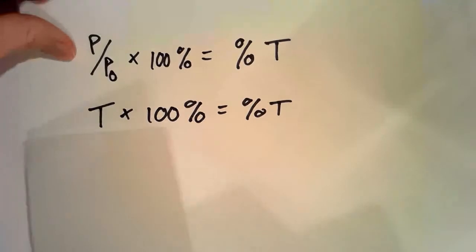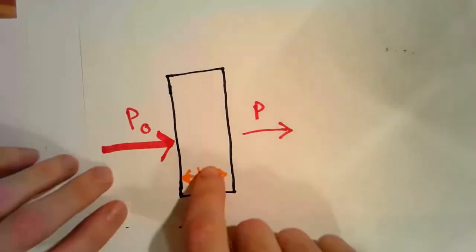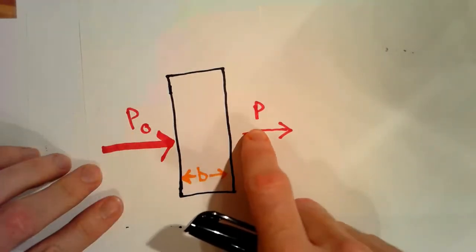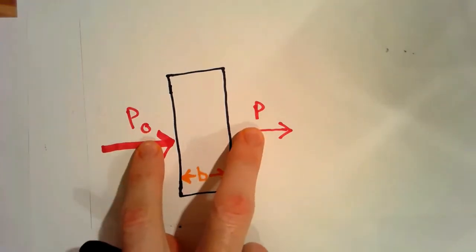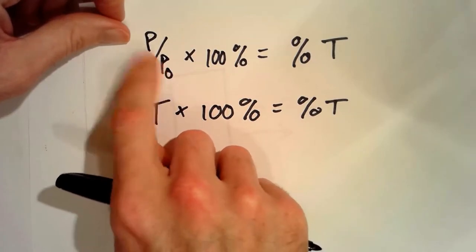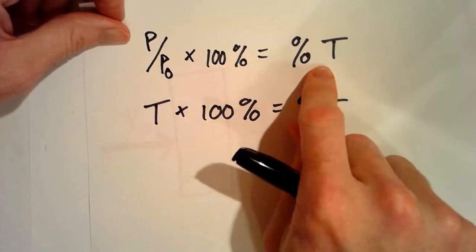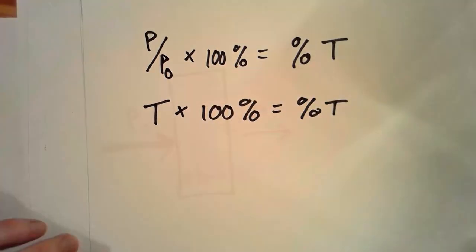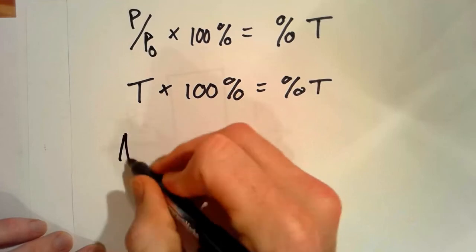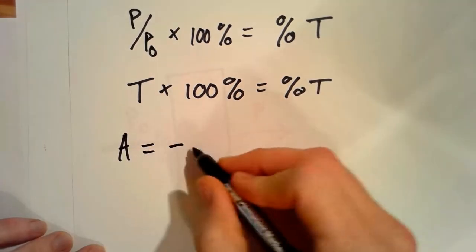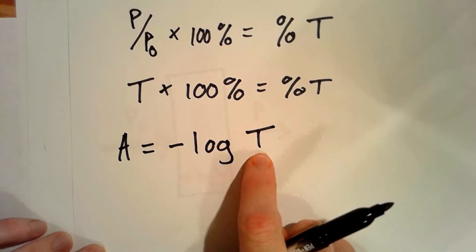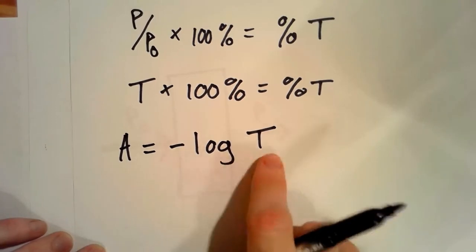If we take a completely pure, completely clear sample like distilled water, the power going in and the power going out should be equal to each other, giving us a value of 1. One times 100% gives us 100% transmittance. The last mathematical relationship is that A — absorbance — equals the negative log of T, where T is transmittance, not percent transmittance. Absorbance equals negative log of T.